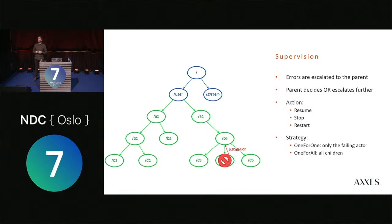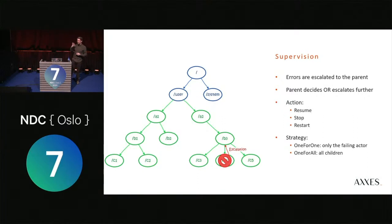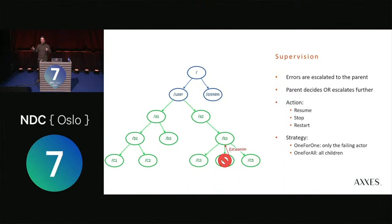Think about supervision like parenting: if your children misbehave at the supermarket, you're responsible. Same with actors — if a child actor throws an uncaught exception, it's escalated to the parent. The parent needs a supervision strategy to deal with it. You can apply that strategy to all children or just the one that failed. Sometimes if you've split a workload across multiple child actors, a single failure invalidates the whole workload, so you'd act on all children.